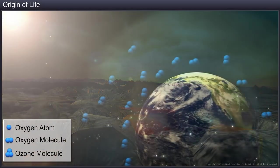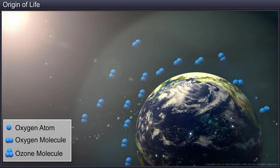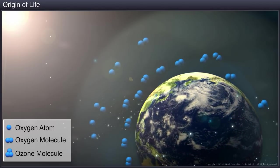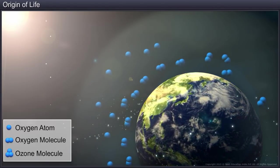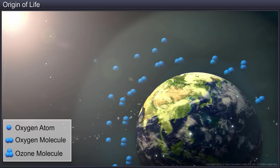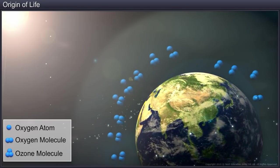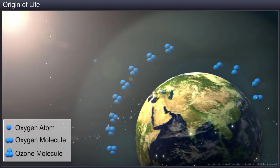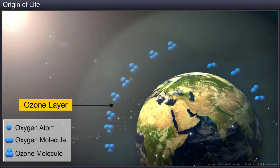The high energy ultraviolet rays of the sun struck the oxygen molecule and split it into oxygen atoms, which in turn reacted with other oxygen molecules to form ozone. And thus, the ozone layer was formed.